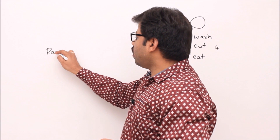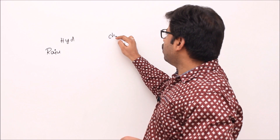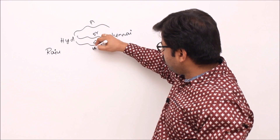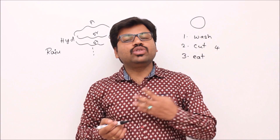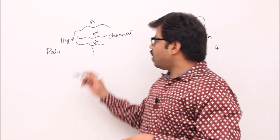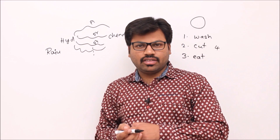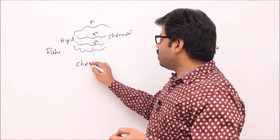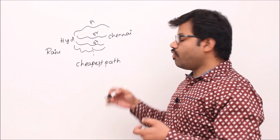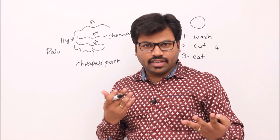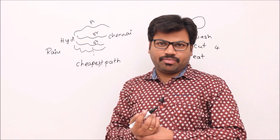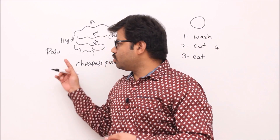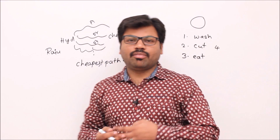For example, my friend Raju wants to go from Hyderabad to Chennai. There are multiple possible paths — path 1, path 2, path 3, and so on. Since Raju is a student, he wants the cheapest path. So how do we find the cheapest path from Hyderabad to Chennai? Raju has to run a 'cheapest path algorithm.' If you can design that algorithm, it helps Raju save his money.